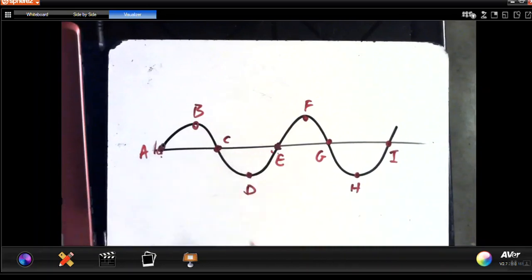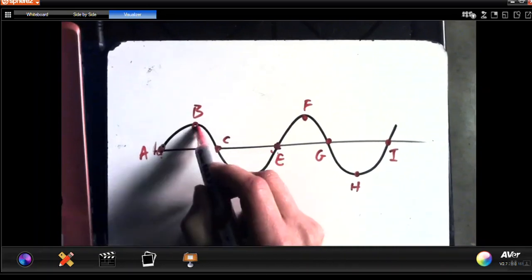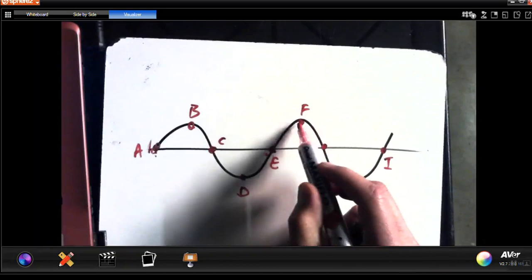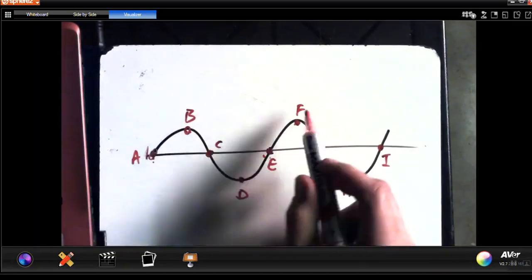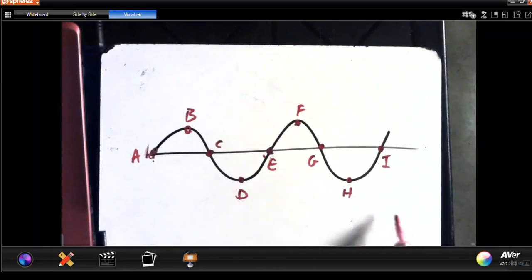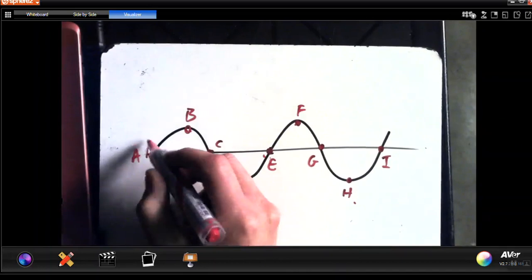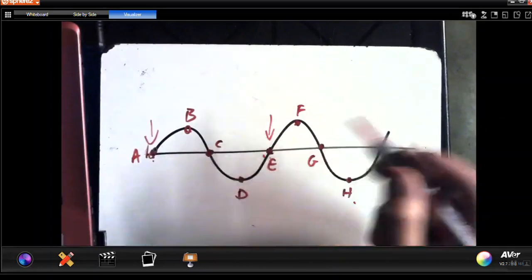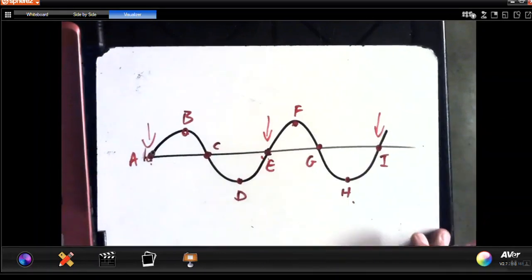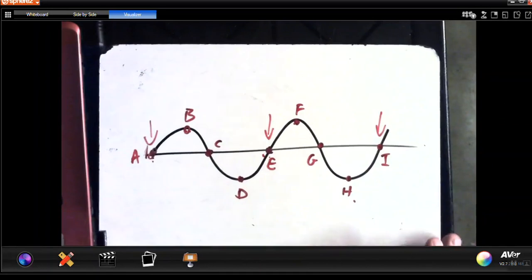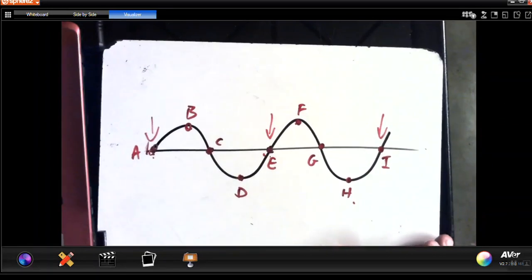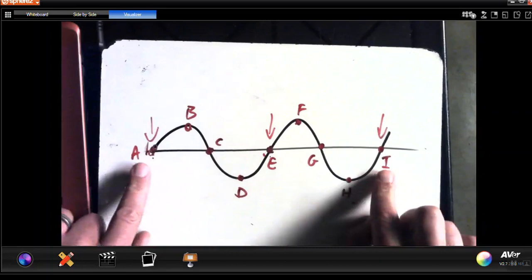So A is before a crest, B is before a crest, so A and E is in phase. B is on a crest, F is on a crest, so B and F is in phase and that will be a wavelength. D is at a trough and H is at a trough, so both of them are in phase. So any points going through the same motion at the same time, we can see here that A and E and I are all in phase with each other.